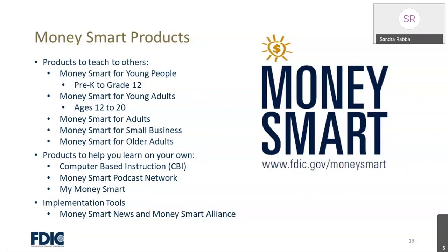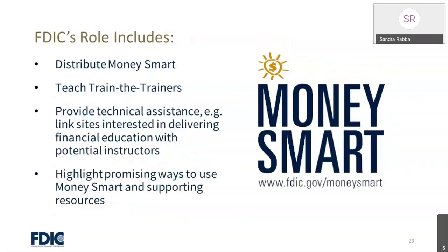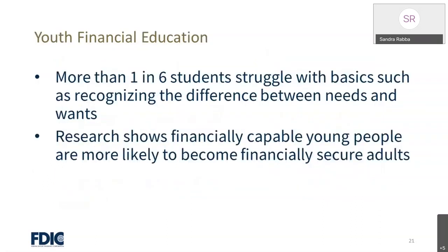The FDIC's role includes distributing Money Smart, training the trainers, providing technical assistance, and highlighting promising ways to use Money Smart and supporting resources. There is a need for effective financial education of young people in the U.S. The FDIC knows that financial education has the potential to help improve how people manage their finances, and these changes are observable long after the training. The goal of the CFPB and FDIC partnership is to empower American youth to make better financial decisions to achieve their own goals throughout the stages of their lives.